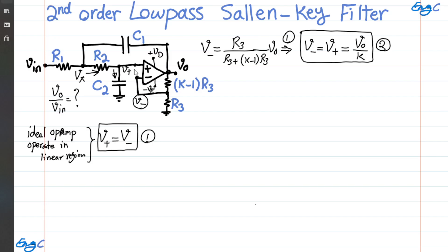Let's keep this as equation number two. Now, V-positive is Vout over K, and the current that flows into the positive input terminal is zero, so whatever current goes through C2 must also go through R2. Effectively, R2 and C2 are in series, and I can compute Vx. The relationship between Vx and V-positive is voltage division between C2 and R2: V-positive equals (1/C2s) divided by (R2 plus 1/C2s), times Vx.